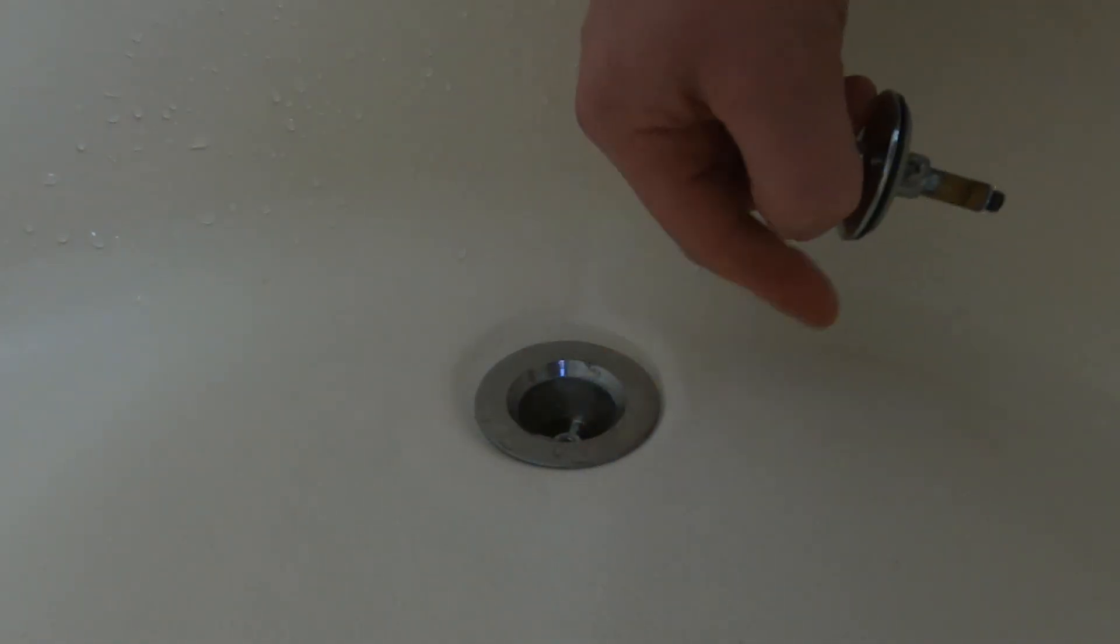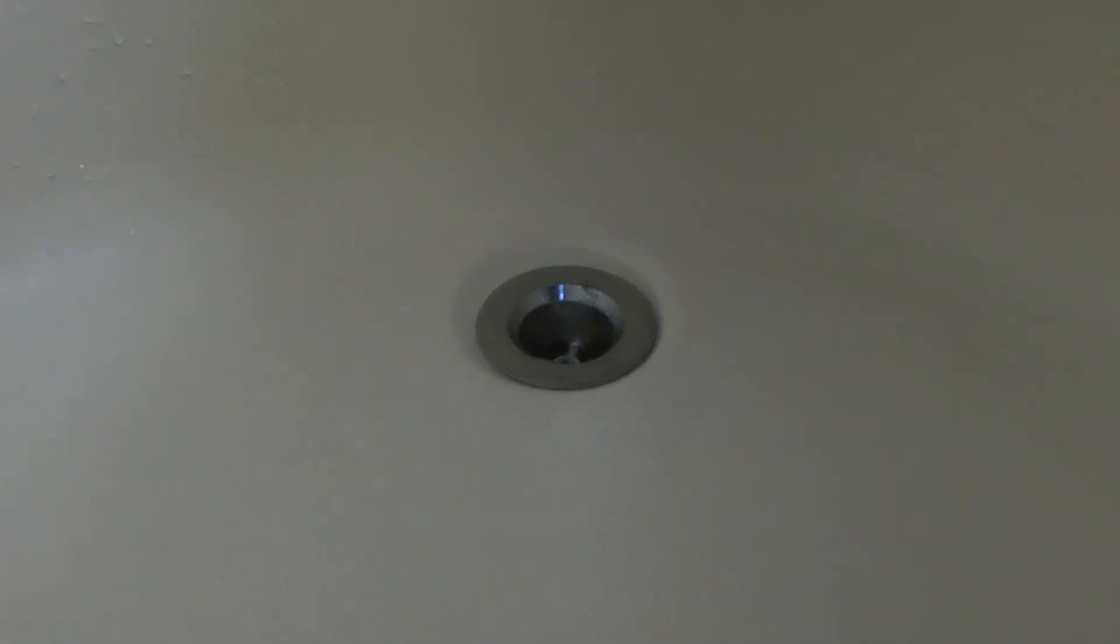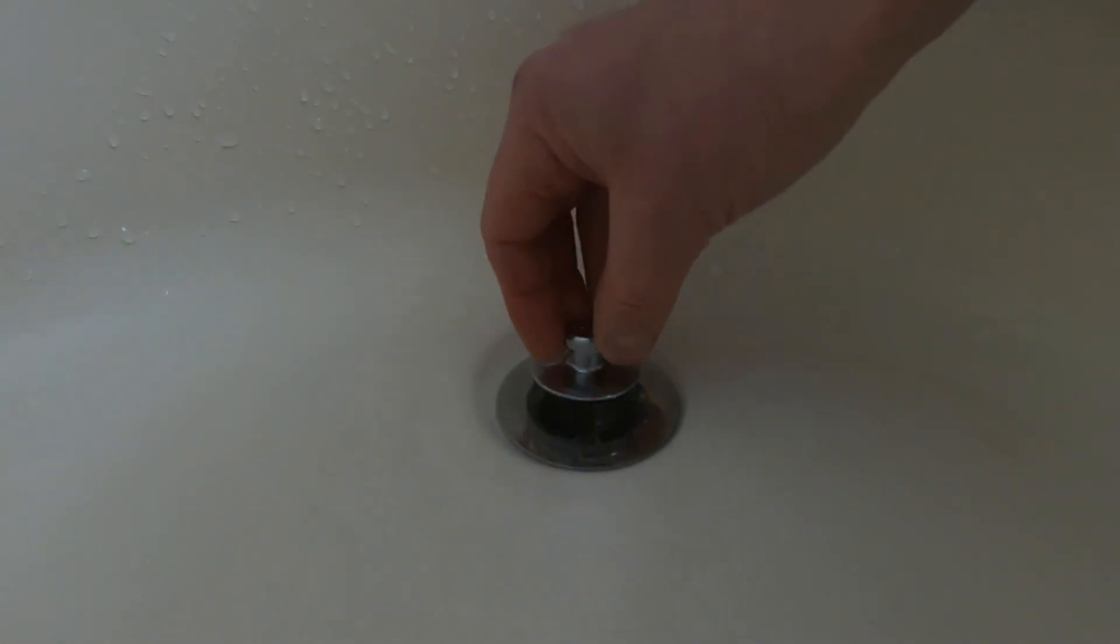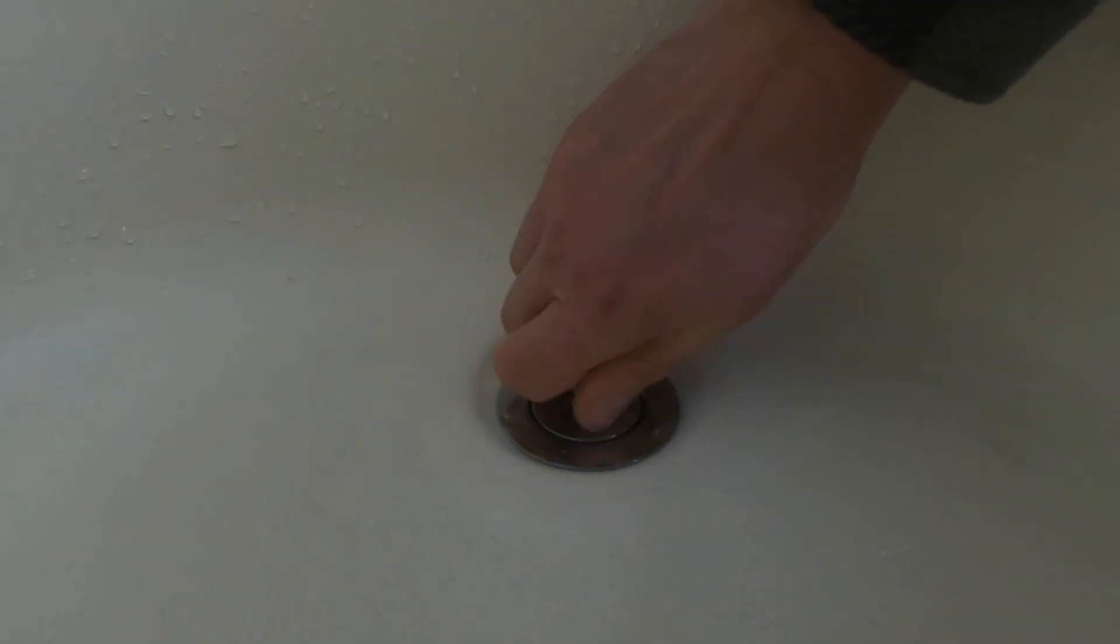And you just clean the hair out of here. Usually it's just built up right here, right in the drain. And then you just put this back and that gets it started again. Very easy to unclog the tub drain.